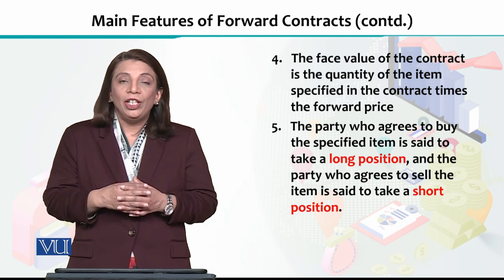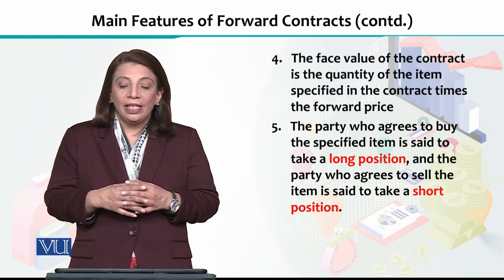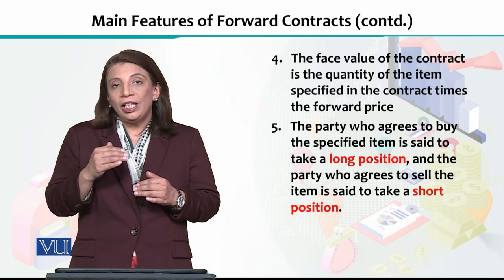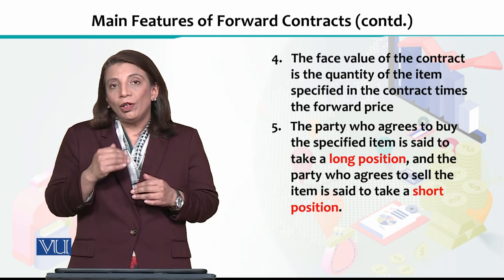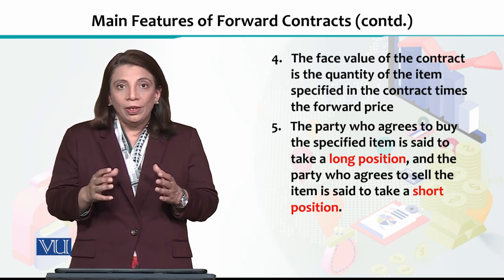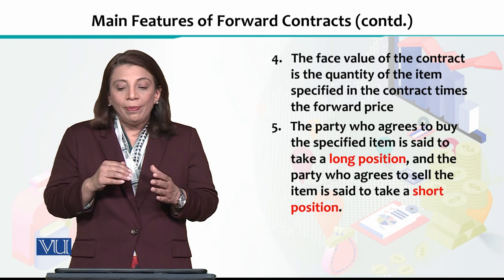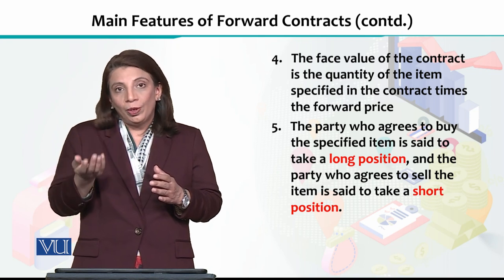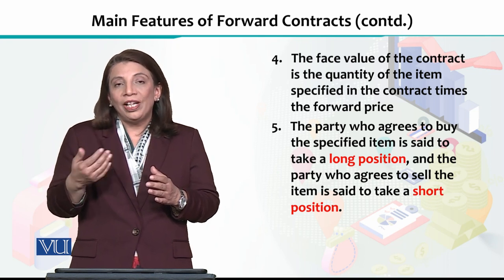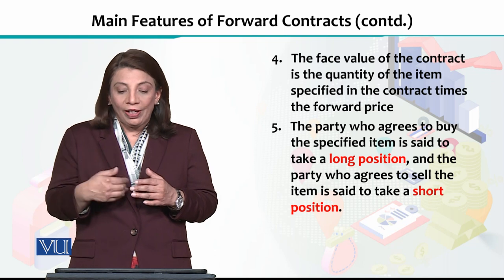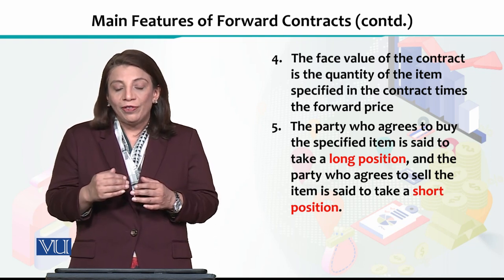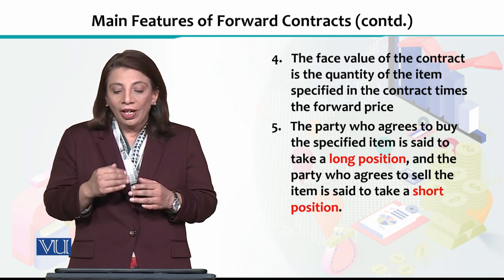Another important thing to understand is the face value of the contract. The face value of the contract is basically the quantity of that item multiplied by the forward price that you have defined. This is how you determine the face value of that contract.